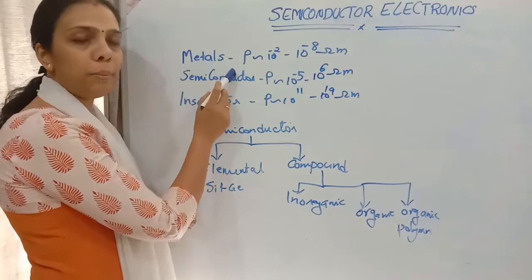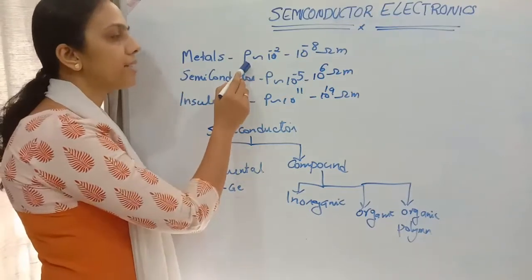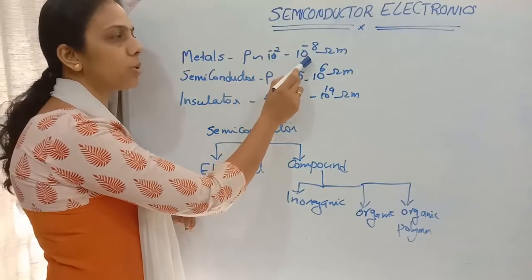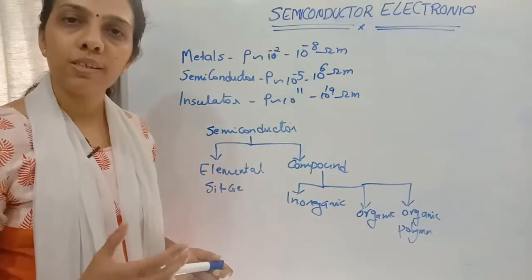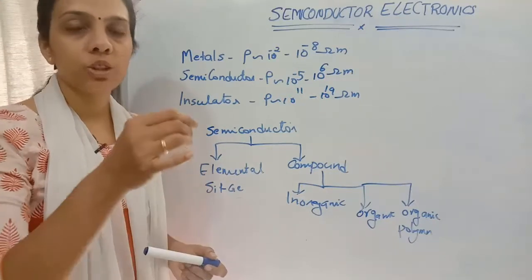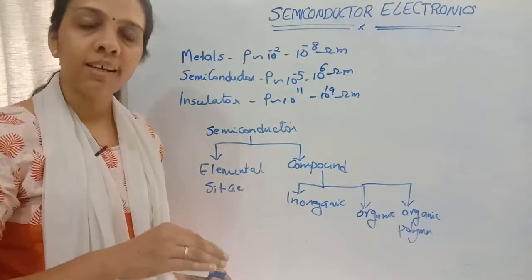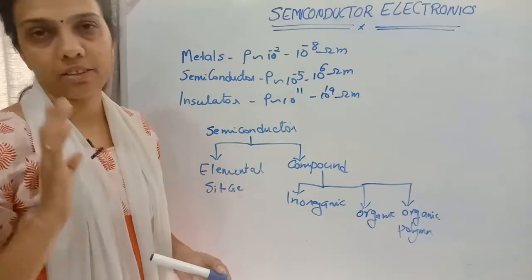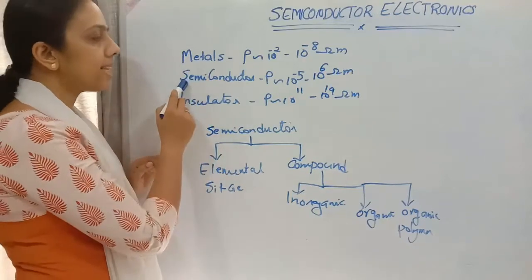All metals are considered conductors. Their resistivity ranges from 10⁻⁸ to 10⁻² ohm·meter. Resistivity is directly proportional to resistance — if resistance is very less, it acts as a conductor.